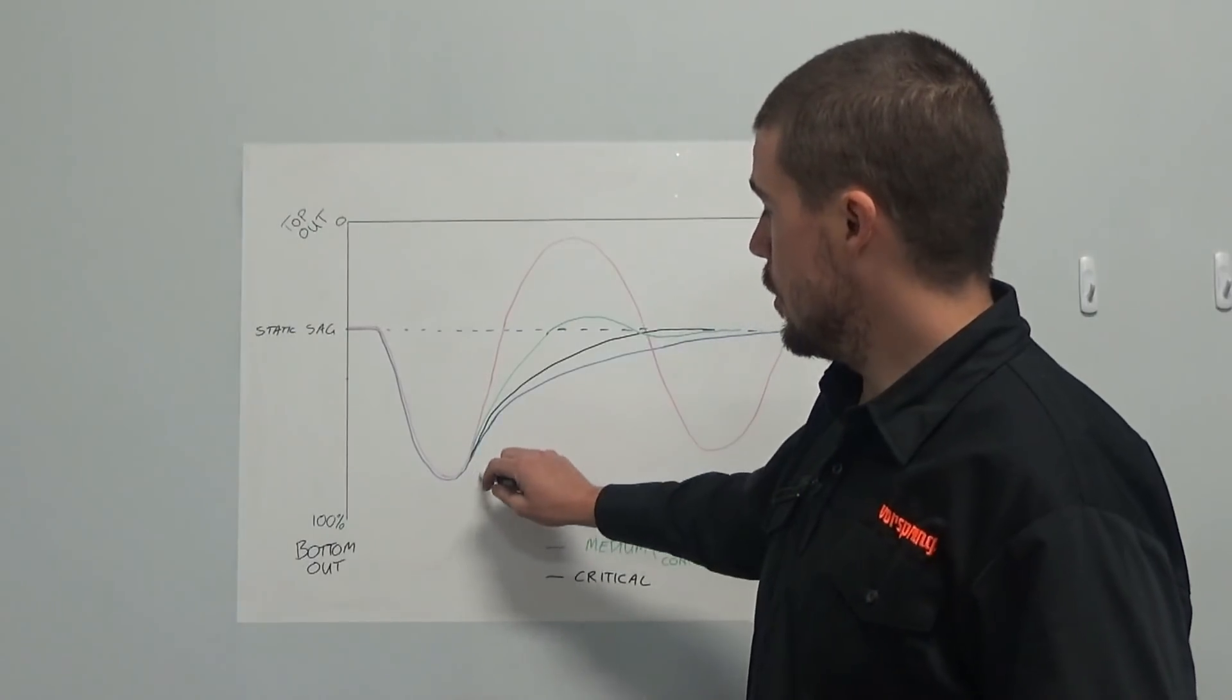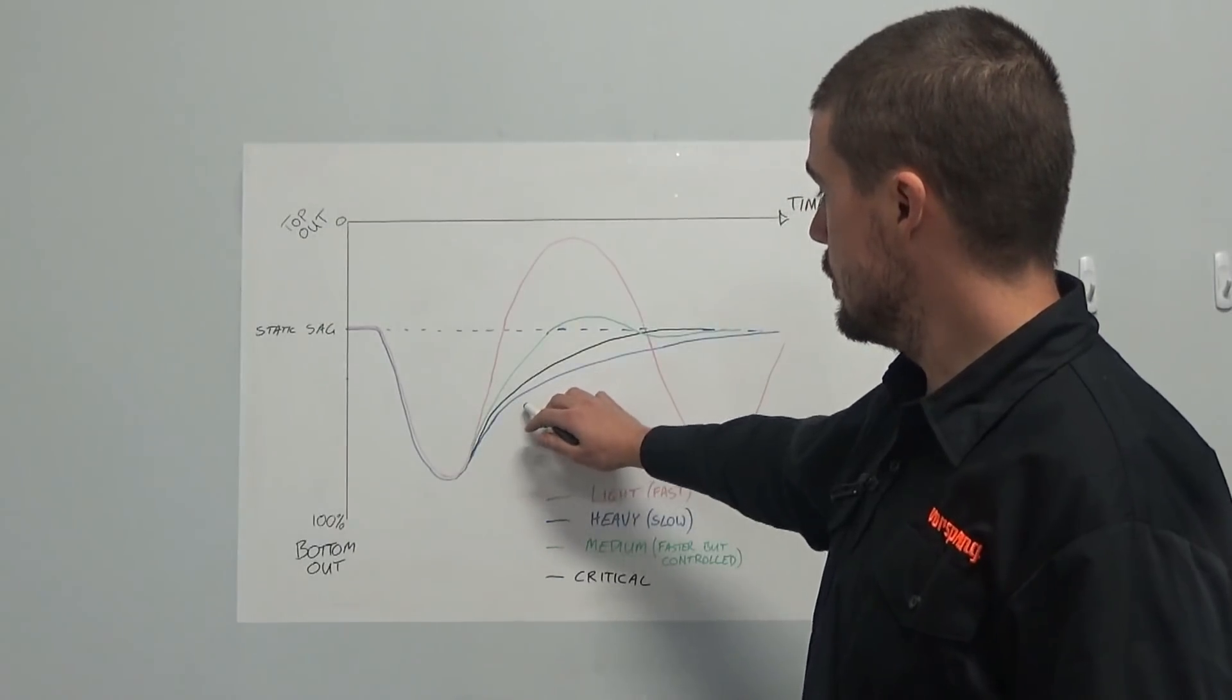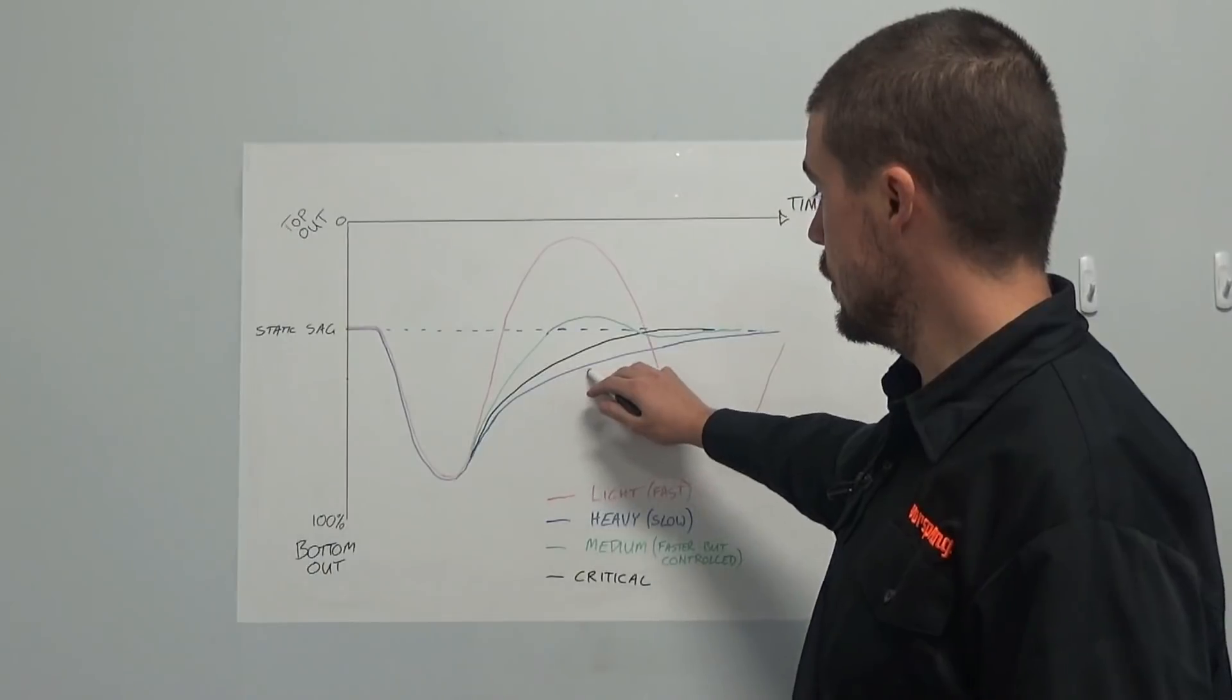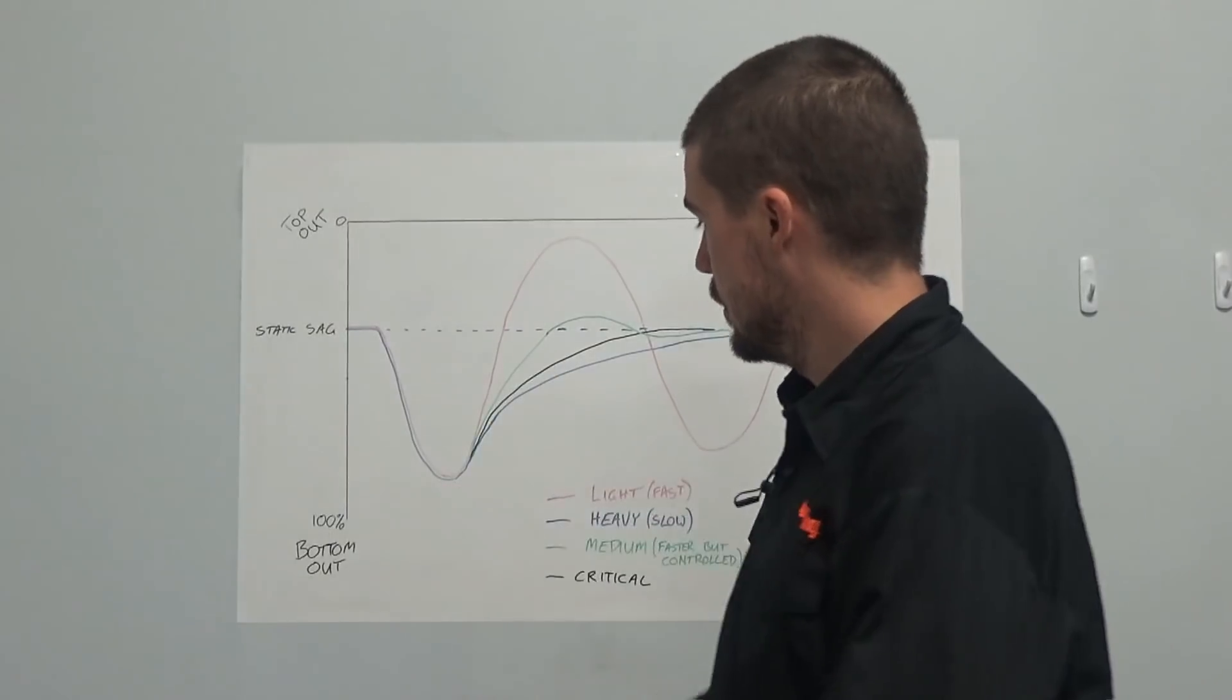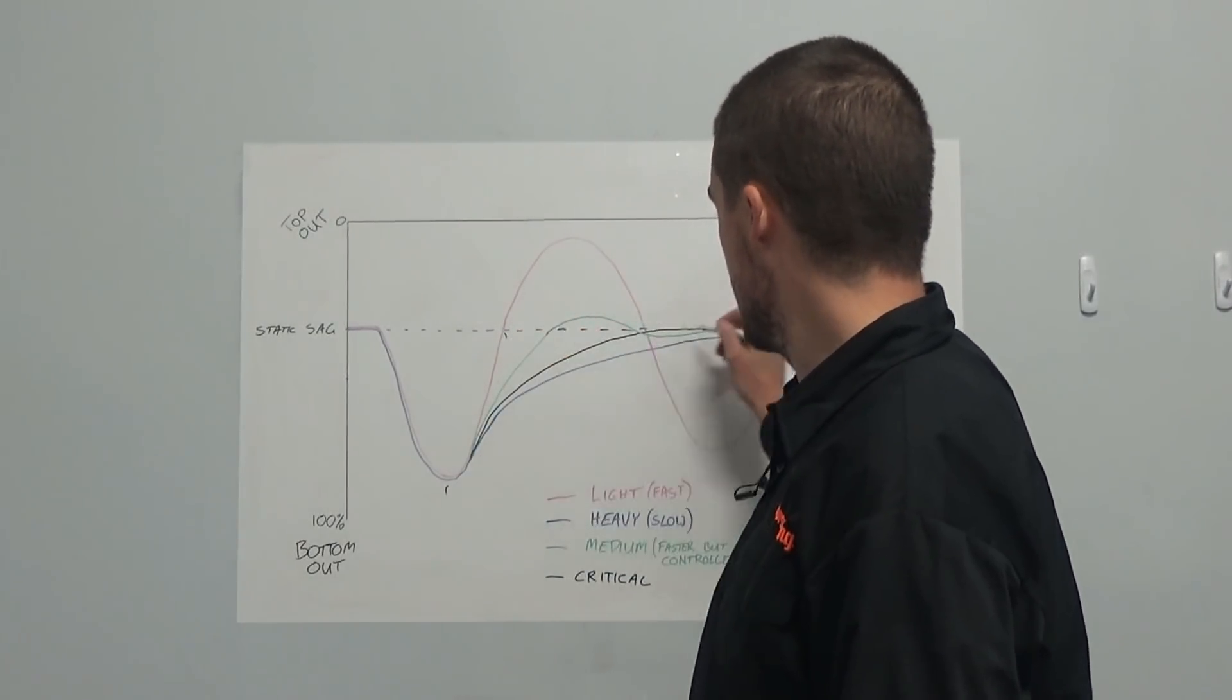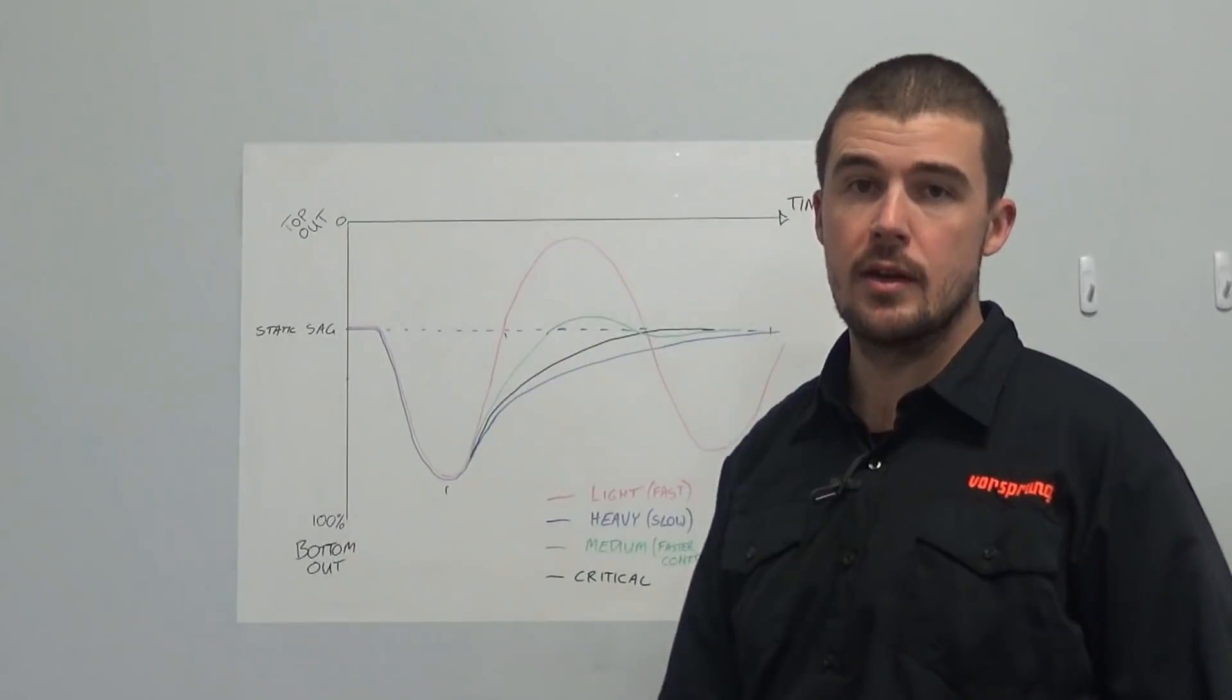So what happens if we go the opposite extreme, run our rebound really slowly, so it's super controlled? Well, following this blue curve here, basically the suspension will extend very slowly until it reaches the sag point. It won't overshoot at all. If you look at the amount of time taken to get from here to back to the sag point there versus over here, we're taking much longer to get there. That means the suspension is not recovering very quickly.